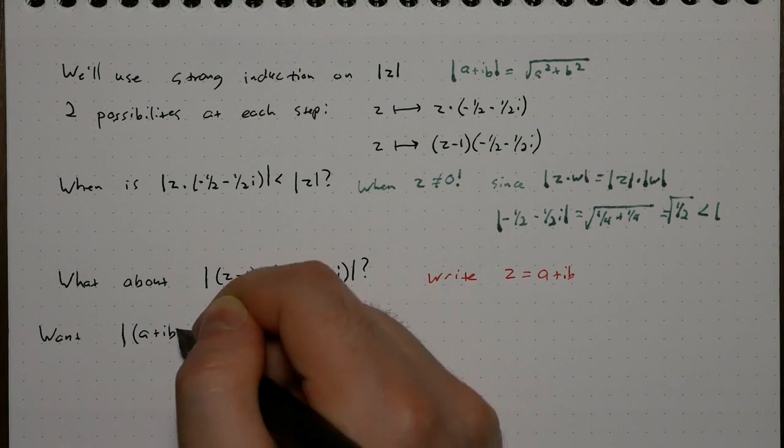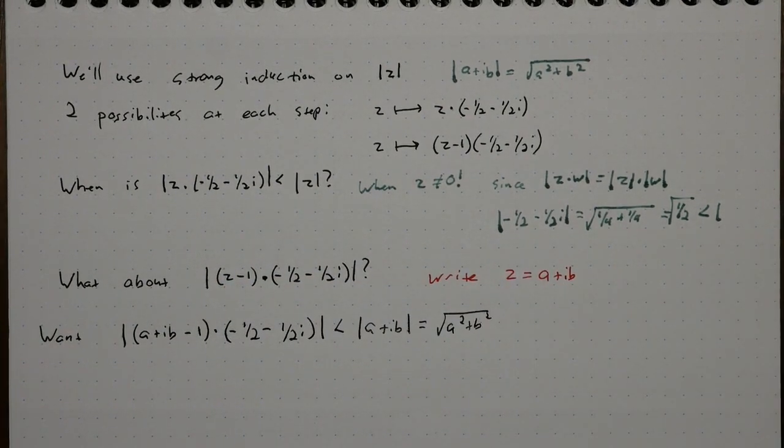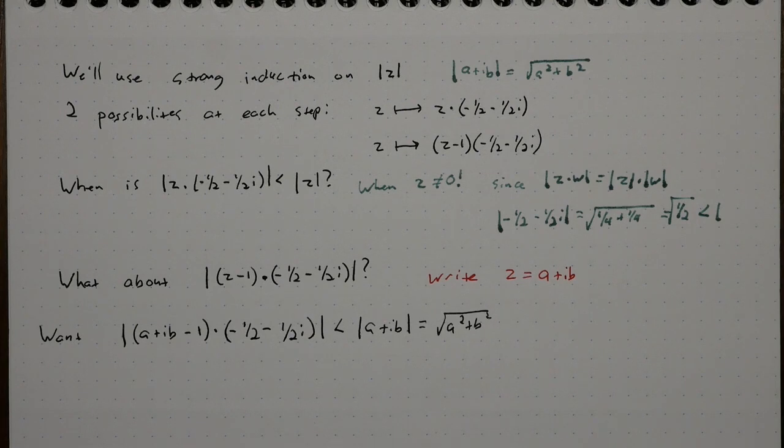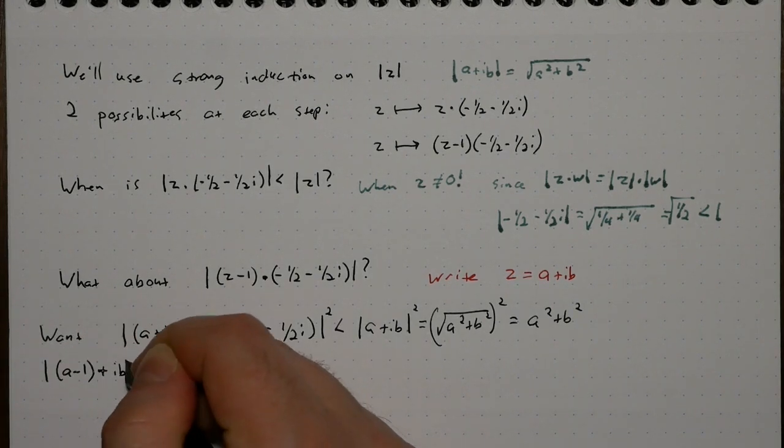We want the norm of a plus i b minus 1 over negative 1 plus i to be less than the norm of a plus i b. We'll square both sides so we don't have to deal with any square roots, and we'll simplify a bit.